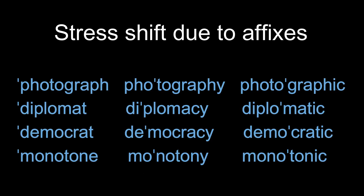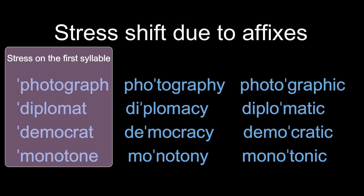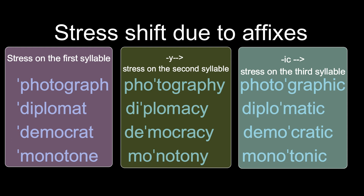Consider these words: photograph, photography, photographic; diplomat, diplomacy, diplomatic; democrat, democracy, democratic; monotone, monotony, monotonic. The words photograph, diplomat, democrat, and monotone have stress on the first syllable. But when suffixes -y or -ic are added to the word, stress shifts to the second and third syllable respectively. There is systematic consistency in stress shift based on affix types, so we examine this aspect in this section.